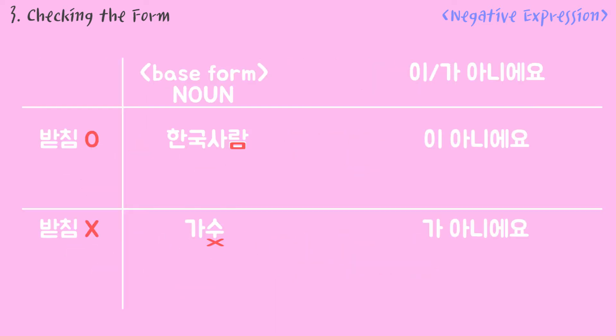Here are some examples: 한국 사람 → 이 아니에요, so 한국 사람이 아니에요. 가수 → 가 아니에요, so 가수가 아니에요.